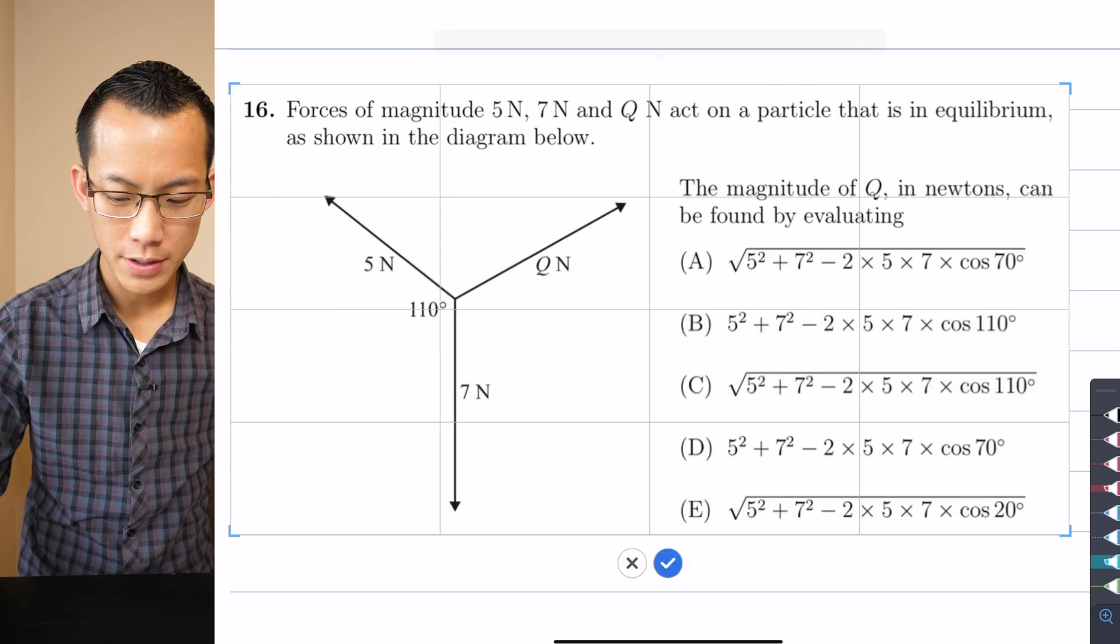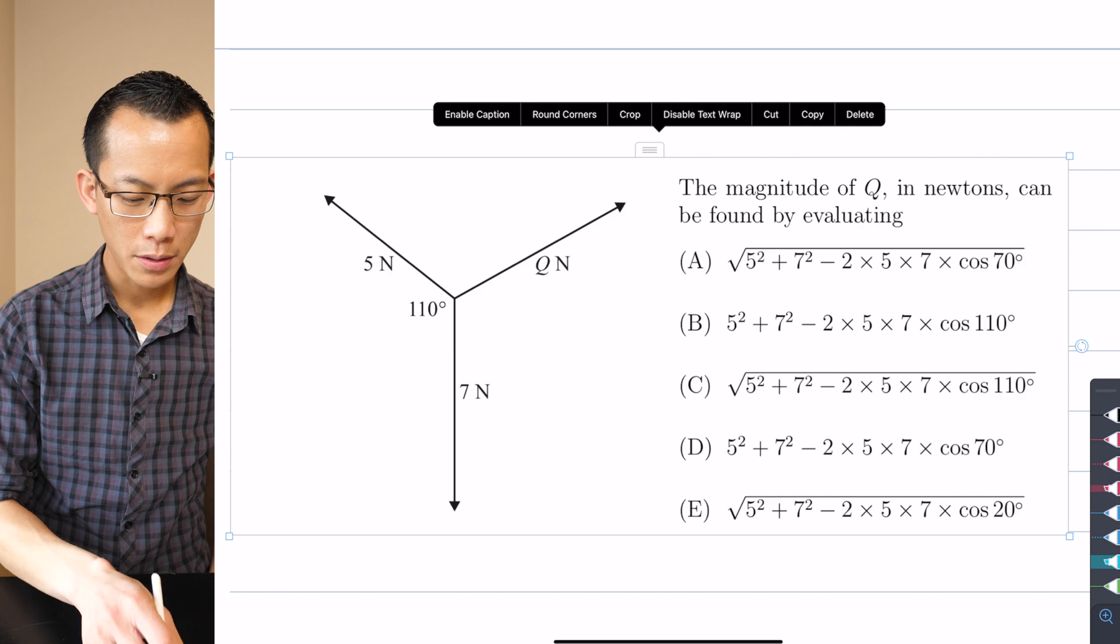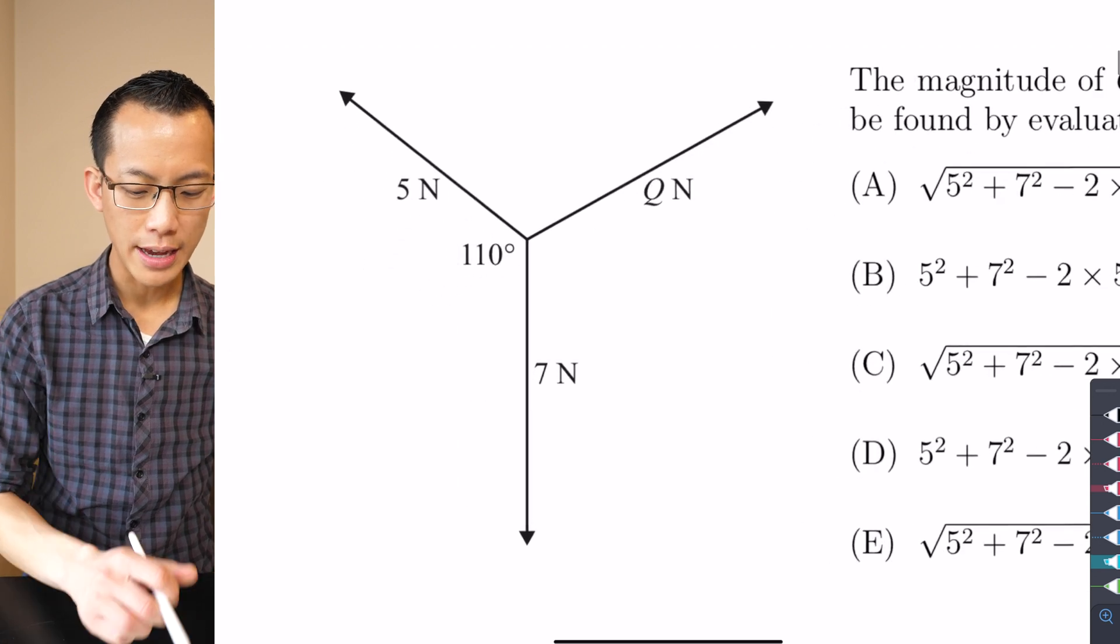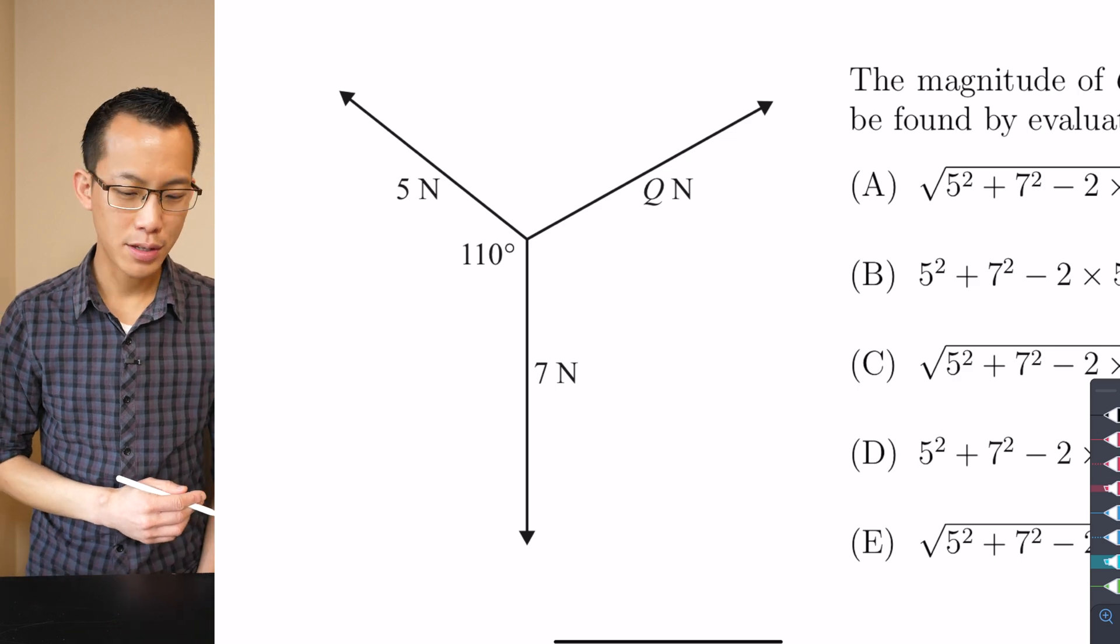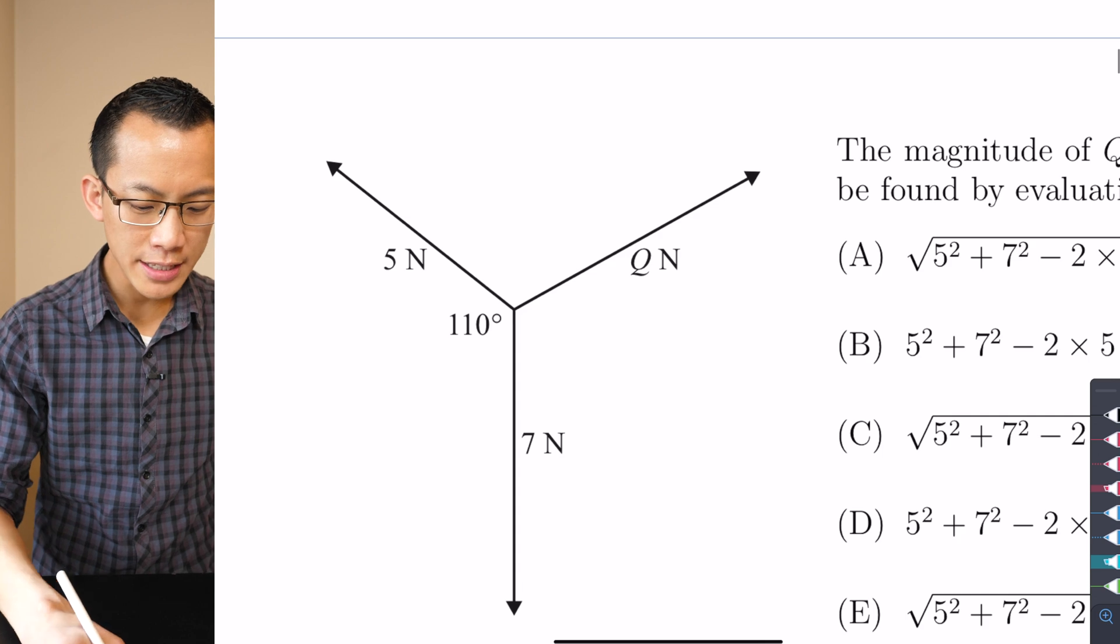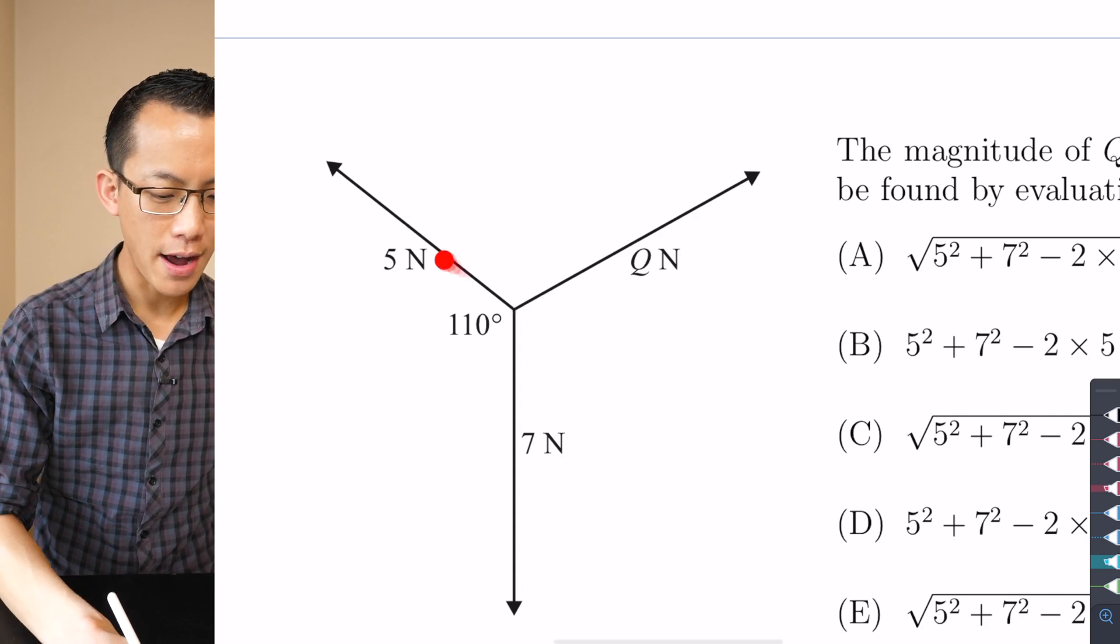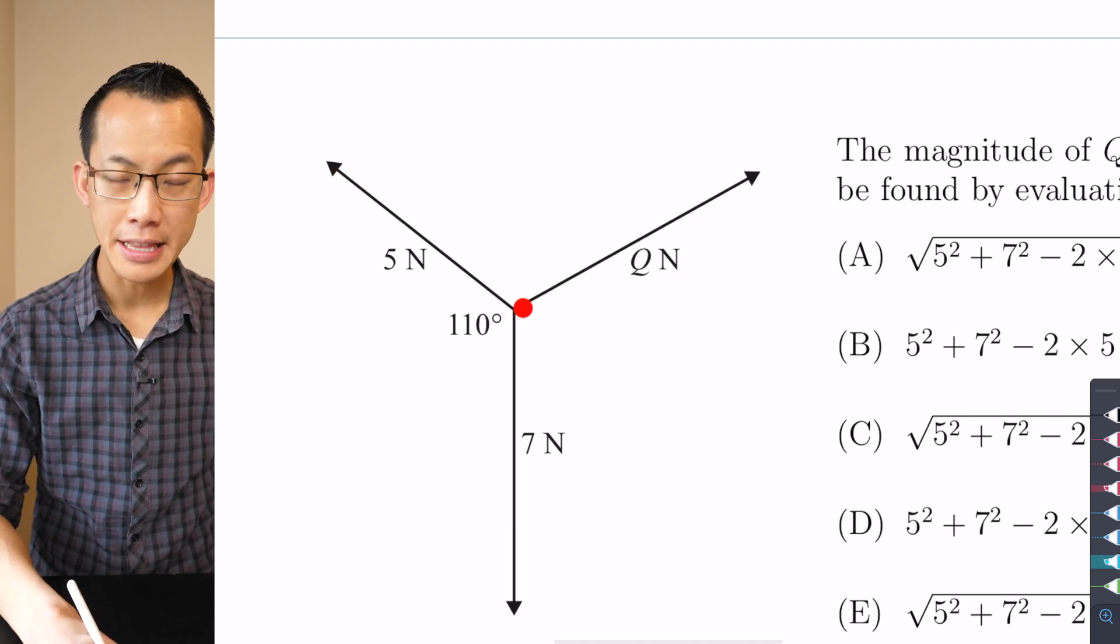Let me just move this out of the way so that I can draw a little more accurately. What I'm going to do is think about doing these vectors one at a time and seeing what diagram gets created. If I say let's imagine doing this 5 Newtons first, that's my first vector I go off in that direction.